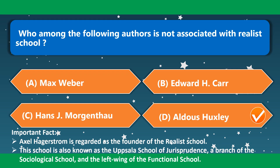Who among the following authors is not associated with the realist school? This is Aldous Huxley — option D is the correct option. Axel Hägerström is regarded as the founder of the realist school, also known as the Uppsala School of Jurisprudence, a branch of the sociological school and the left wing of the functional school.